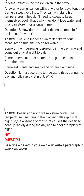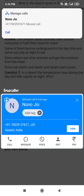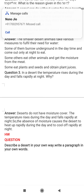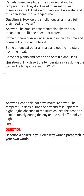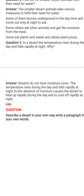Some animals eat other animals and try to get water in the form of moisture which they get from the meat while eating. And some animals who do not eat meat eat plants and seeds, and they try to get water in the form of plant juices. So this is the answer of this question.